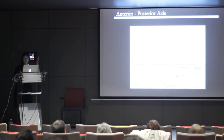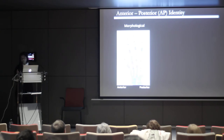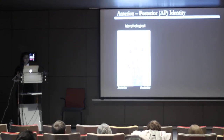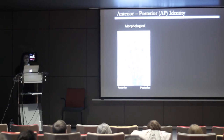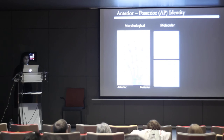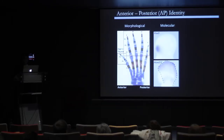What is this anterior-posterior identity? It can be classified in several ways. There is a morphological distinction between an anterior and a posterior part of the limb. The morphological distinction of digit one, which is an anterior digit — a thumb — is that it has two phalanges, compared to your posterior digits, which have three phalanges. Apart from the morphological distinction, there is also a molecular-level distinction in the developing limb. Certain genes, like PAX9 for example, are only expressed anteriorly and not expressed posteriorly.